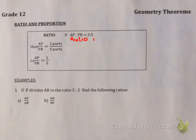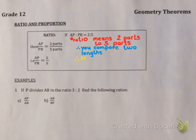So what does ratio mean? Well, if AP to PB equals 2 to 5, that means AP is 2 parts to PB is 5 parts. What you're doing here is comparing two lengths. Therefore, the lengths could be any distances as long as they simplify to a ratio of 2 to 5.